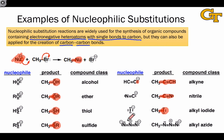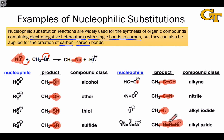This last nucleophile looks a little bit odd, but notice that on the terminal nitrogens it's negatively charged. This is the azide anion, and when it reacts in nucleophilic substitution reactions, the result is an alkyl azide.